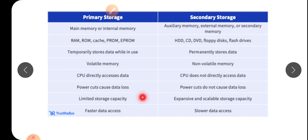RAM and ROM have limited storage capacity — 2 GB or 4 GB, very limited. Whereas secondary storage can be extended to 64 GB or more. Primary storage has faster data access, while secondary storage has slower data access — it supplies data to us more gradually.